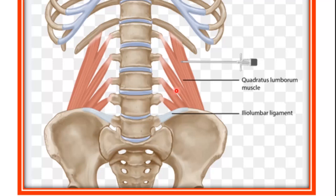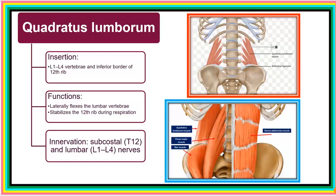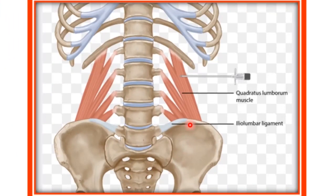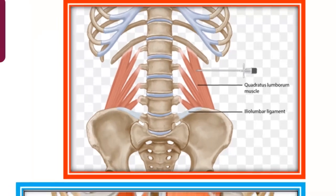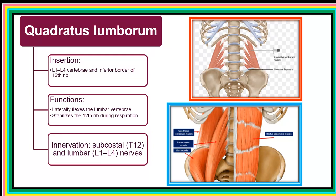After picking origin from this lower end, the muscle moves upwards and inserts at various points beginning from L1 approximately to L4, and also at the inferior border of the 12th rib. Its function is lateral flexion of the lumbar vertebrae, and it also stabilizes the 12th rib during respiration. The innervation is the subcostal nerve (T12) and lumbar nerves L1 to L4.